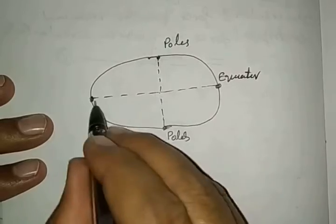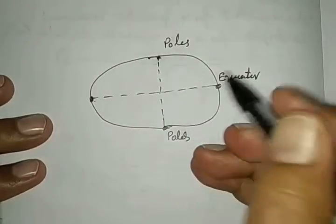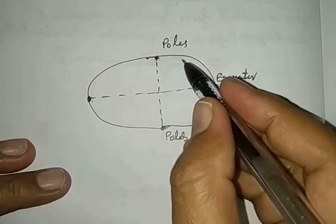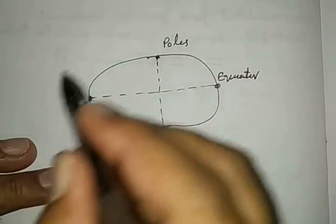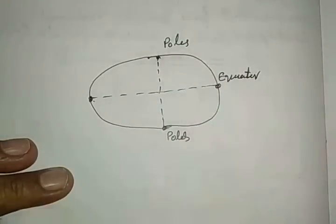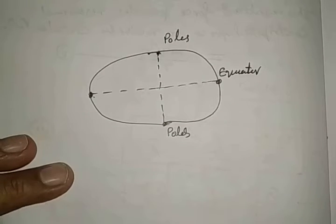Equator radius is longer than the radius of the pole here. That is why we said almost this Earth is like an elliptical shape.